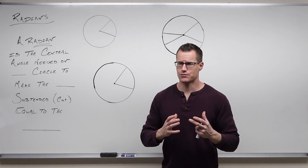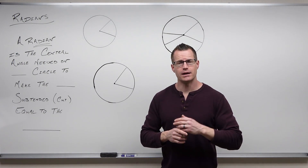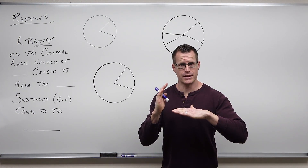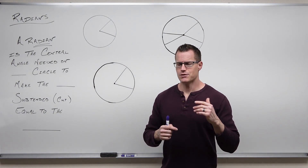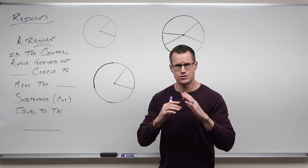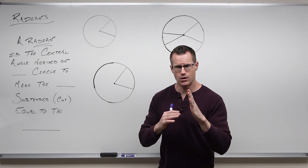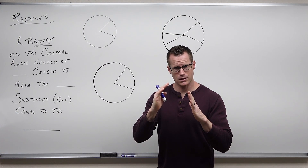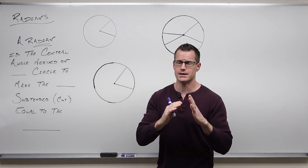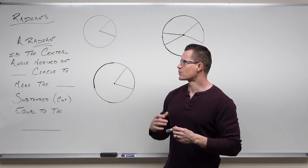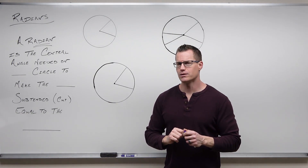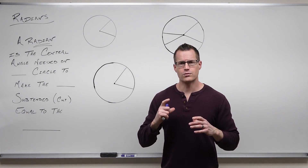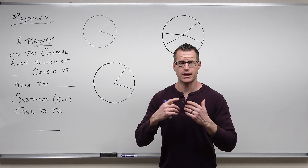Here's what a radian stems from. A radian is an angular relationship between a radius and an arc length that's equal to that radius. In other words, if you take a radius of a circle and a central angle that cuts an arc and compare them, a radian is the angle that makes the arc equal to the radius. A radian is a central angle needed on any circle — it doesn't matter whether the circle is small or large.